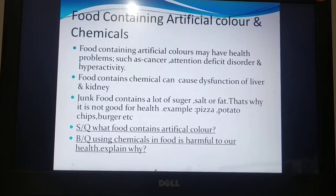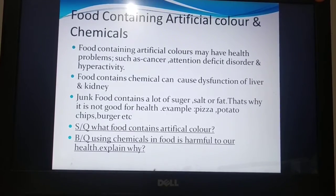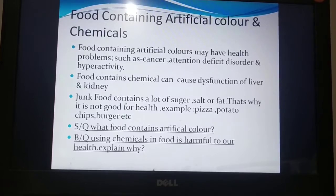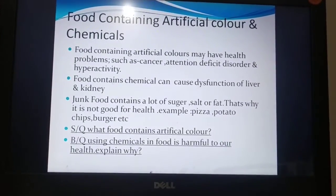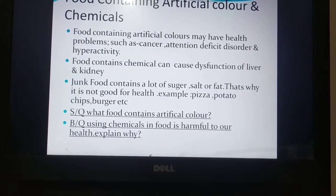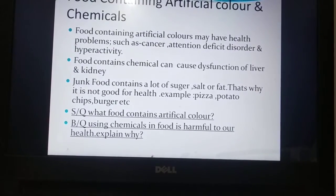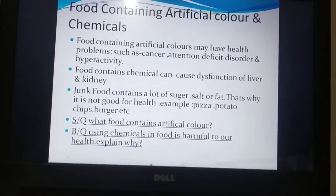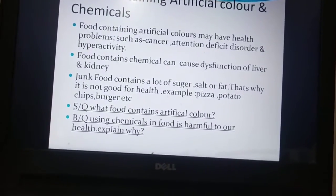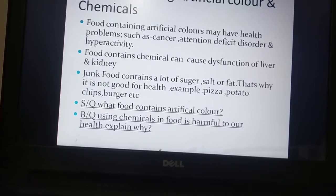After this topic, you will be able to answer the short question: what food contains artificial color? Pizza, potato chips, and burger contain artificial color. There is also a broad question: using chemicals in food is harmful to our health — explain why. Chemicals used in food can cause dysfunction of the liver or kidney. That is why we should avoid them. For the broad question you have to write other points and explanation to get full marks. This broad question will be your homework today.